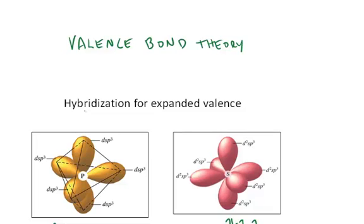Valence bond theory. Valence bond theory also can correctly predict the geometries for expanded valence type molecules. There is a hybridization which also occurs that can explain the electronic geometries in such cases.